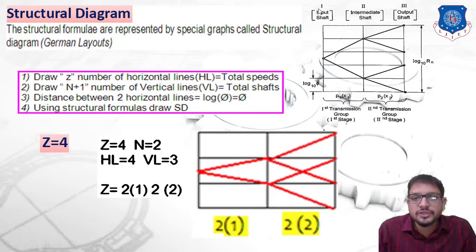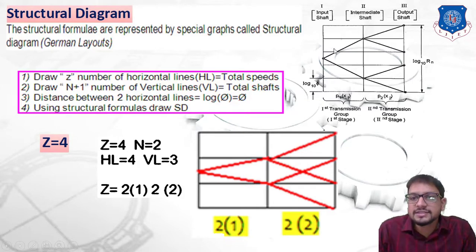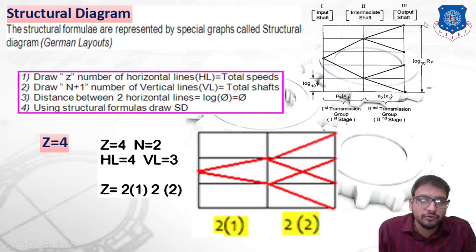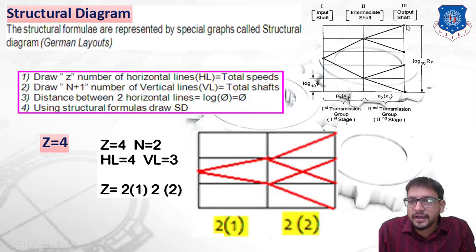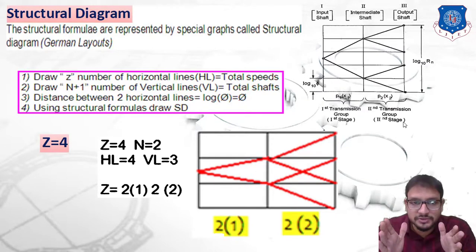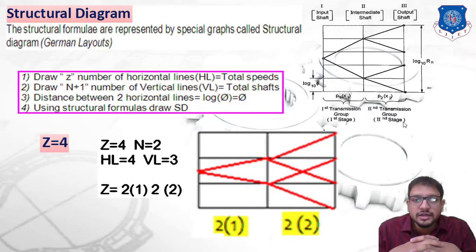The first vertical line represents the input shaft, the second represents the intermediate shaft, and the third represents the output shaft. In this diagram you can observe it has two stages — the space between the first and second lines represents stage 1, and the space between the second and third lines represents stage 2. These vertical lines represent total shafts.